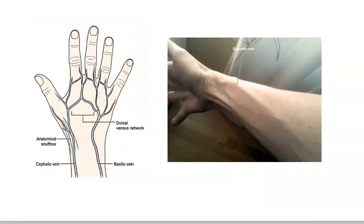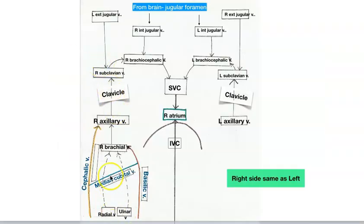That's it for the veins of the head, neck, and upper extremity. Make sure you understand those and can visualize this flow using your charts and diagrams. The next vein video will be on the abdominal veins and the lower extremity.